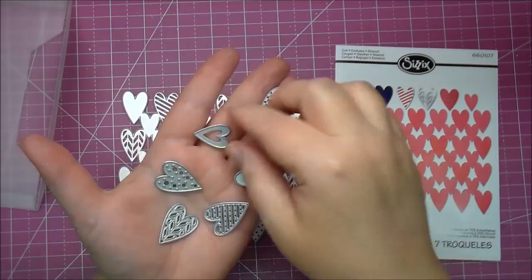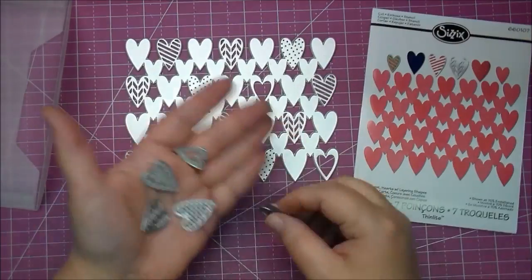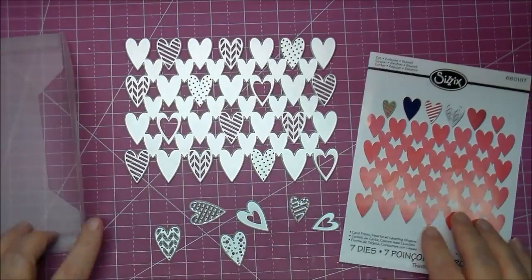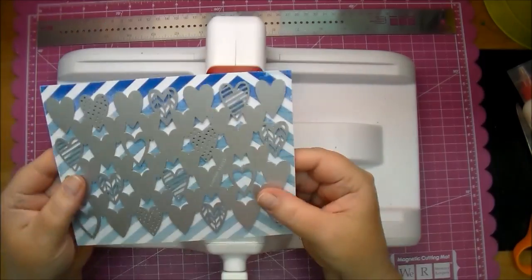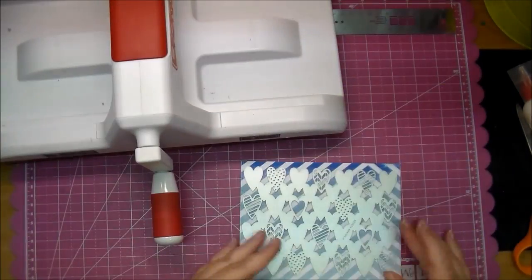This is a card front and the front of this is four and three quarters by six and a quarter, so it's large enough to cover your regular A2 size card, and those are six extra layering dies that come with it.